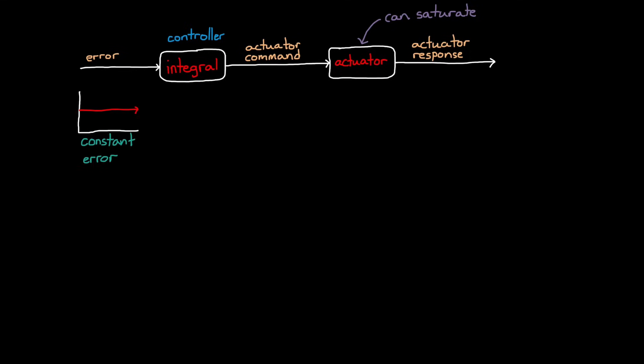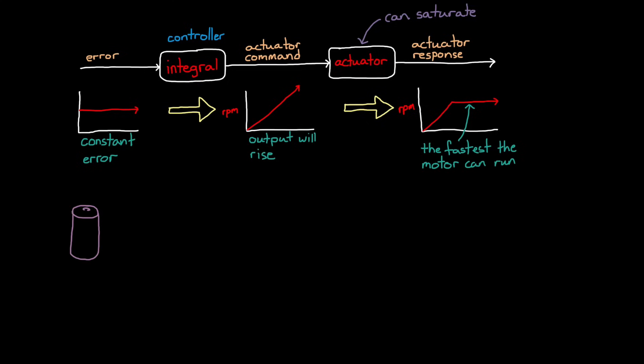We begin by looking at the path the error takes through the integral to generate an actuator command, and then through an actuator to get its response. Imagine a scenario where the actuator can saturate, or another way of putting it, where the actuator is not able to follow the command it's given. Picture this. A system is subjected to some continuous non-zero error. When that error goes through the integrator, the output will continue to rise over time. And if our actuator is, say, a motor, then we can think of this value as the commanded RPM. If we command a motor with this ever-increasing request, it will spin up and follow the command at first. But eventually it will hit its maximum RPM and won't go any faster, even if the actuator is being commanded to do so. This is saturation. The motor can't run any faster.